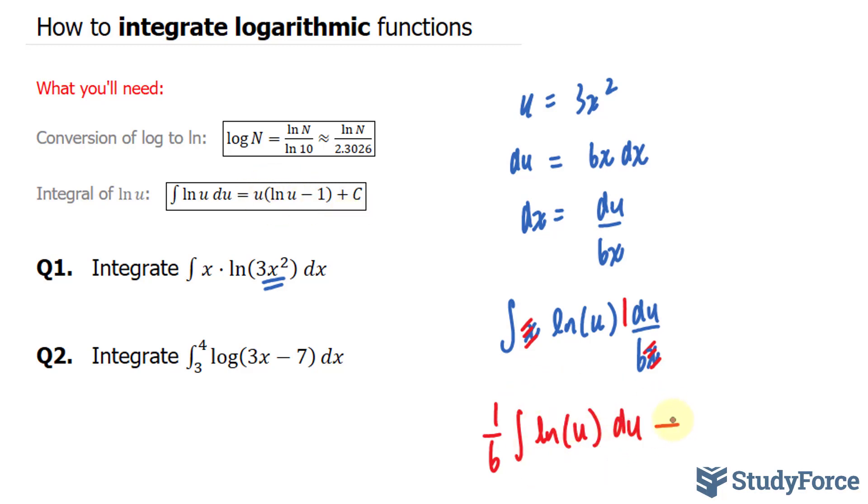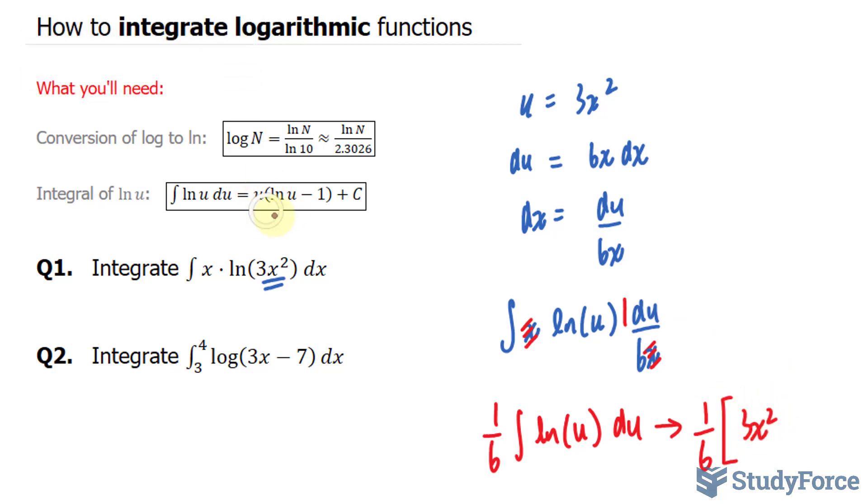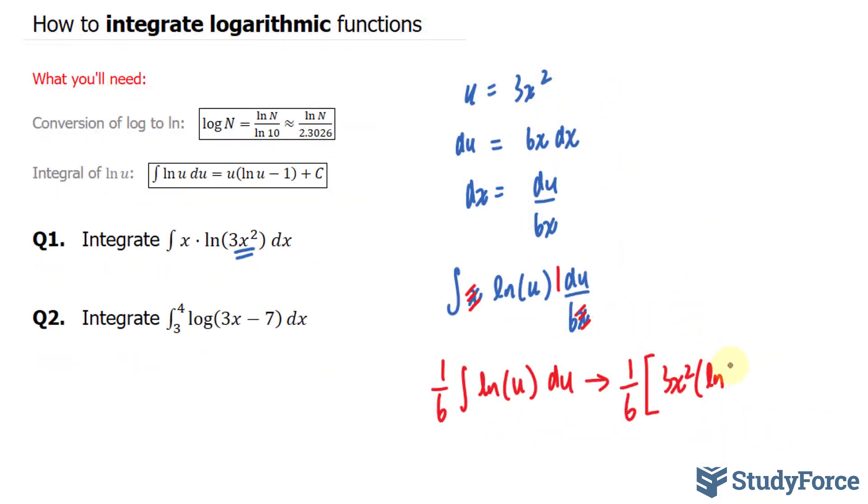It's the following. So my final answer is 1 over 6. I'll introduce square brackets. My u was 3x squared. Bracket. ln 3x squared. Minus 1. Close this bracket. Plus c.